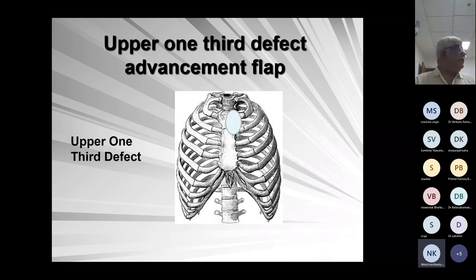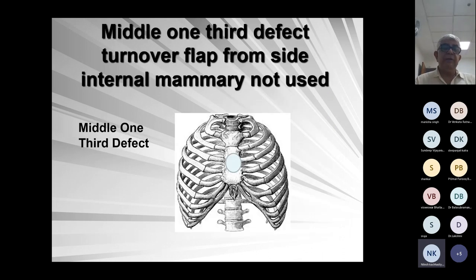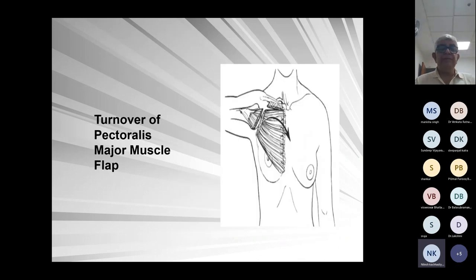For the upper one-third defect, you can do an advancement of the flap based on the major pedicle. For a middle one-third defect, you can elevate the muscle from the lower part of the sternum based on the major pedicle, which has not been used for revascularization. For the turnover flap, you tie the major pedicle and, based on the minor pedicle, turn the flap over to cover the middle part of the sternum.